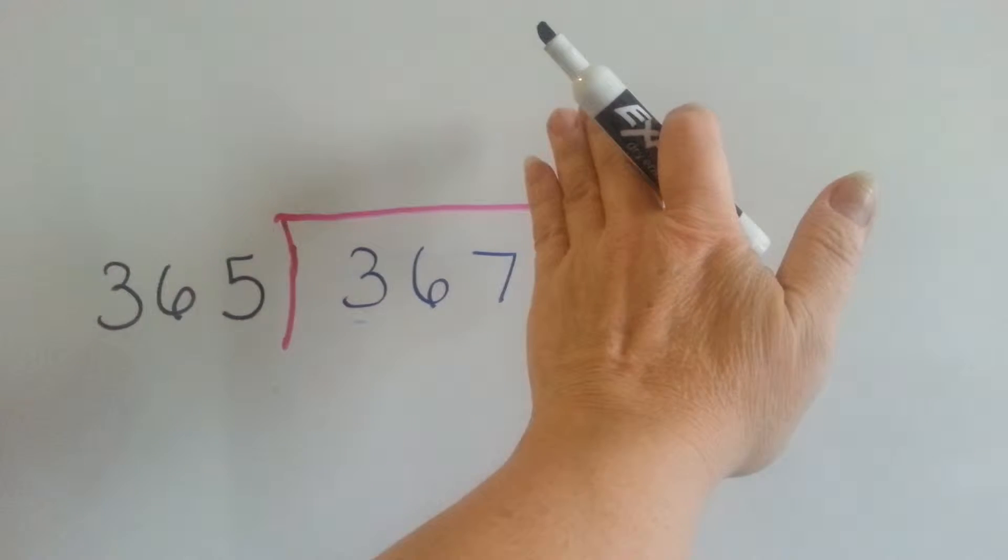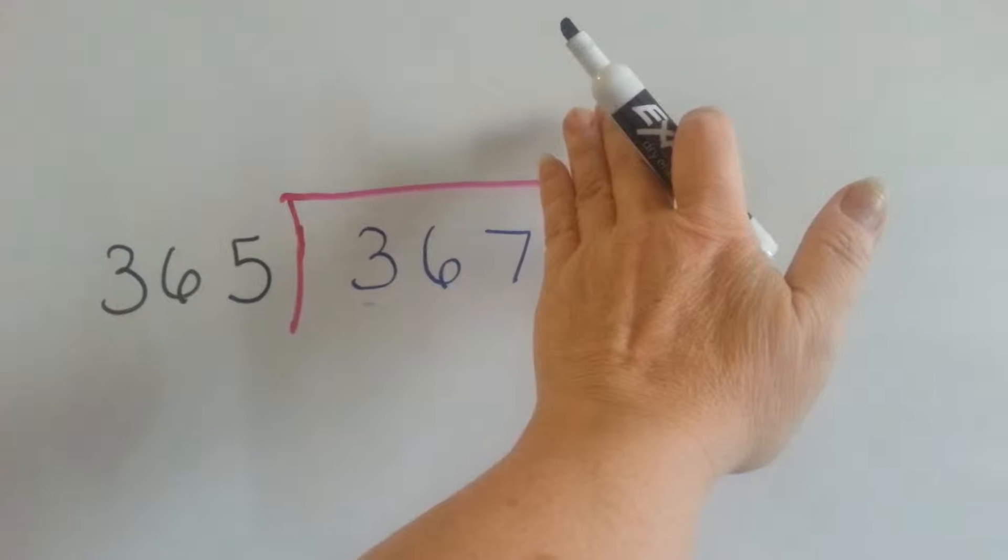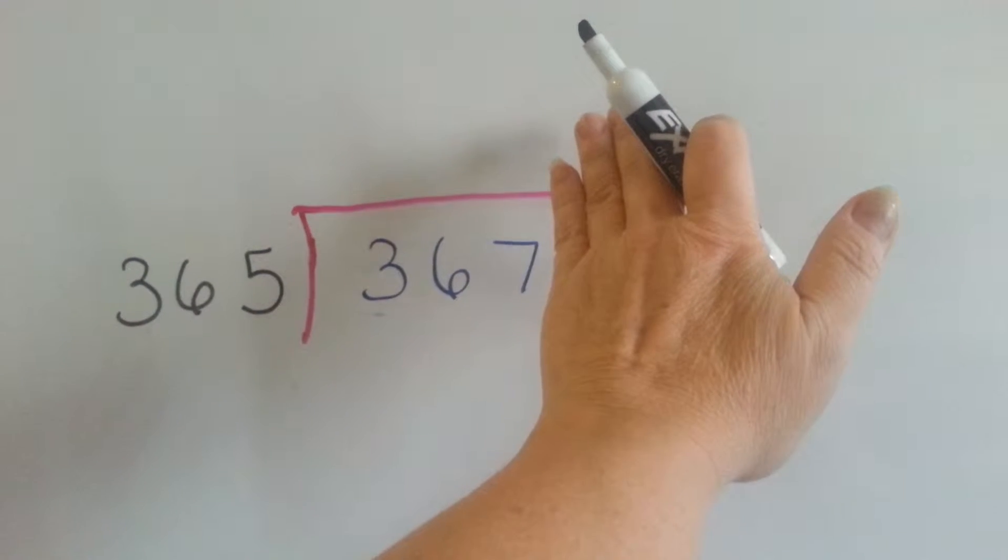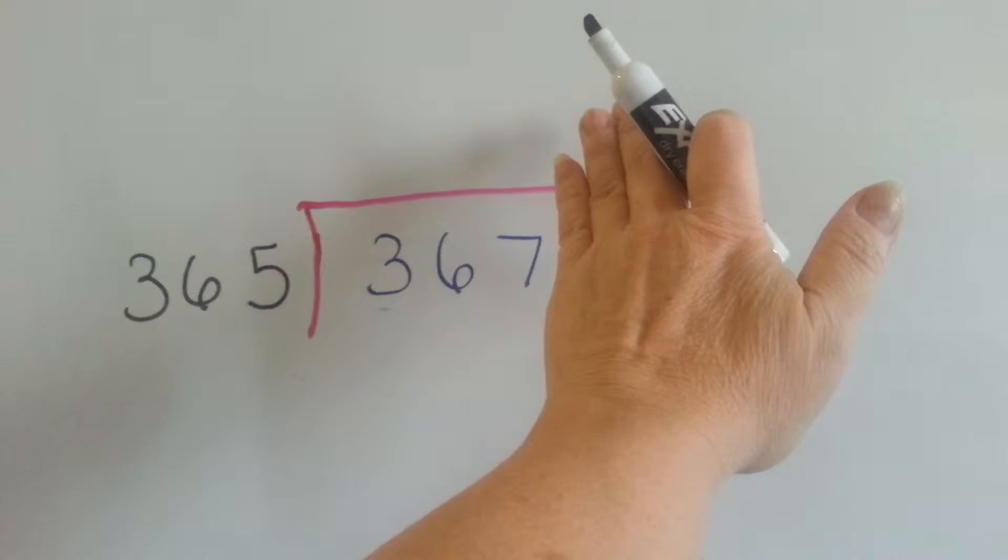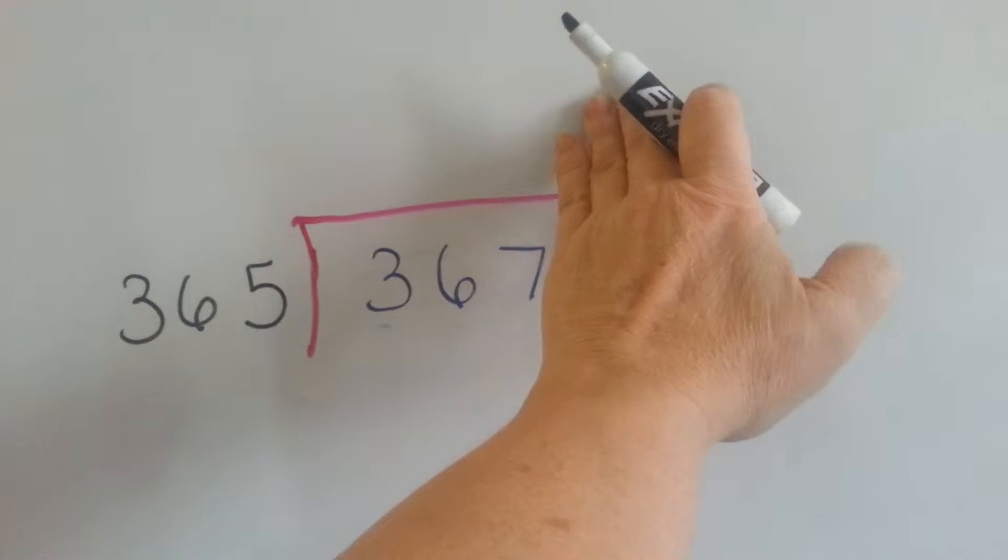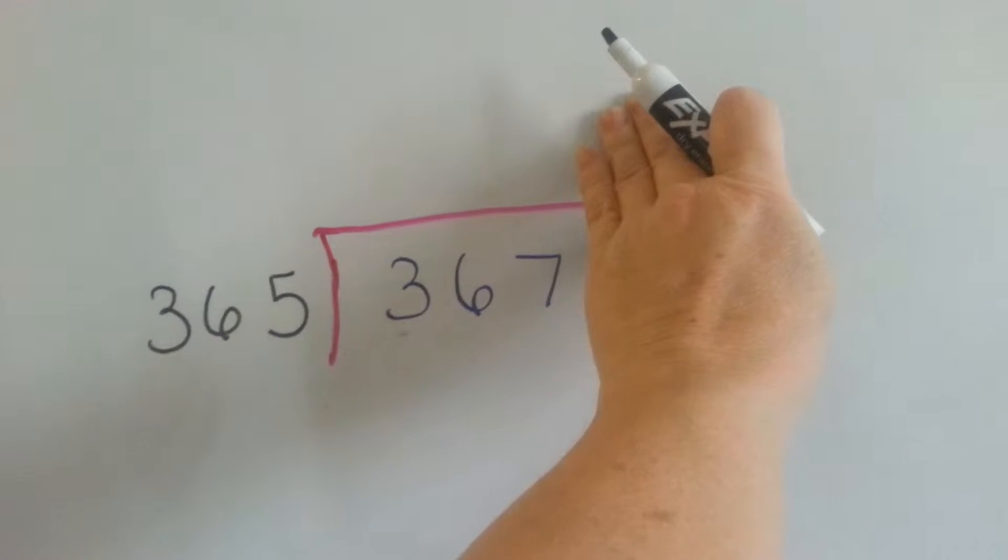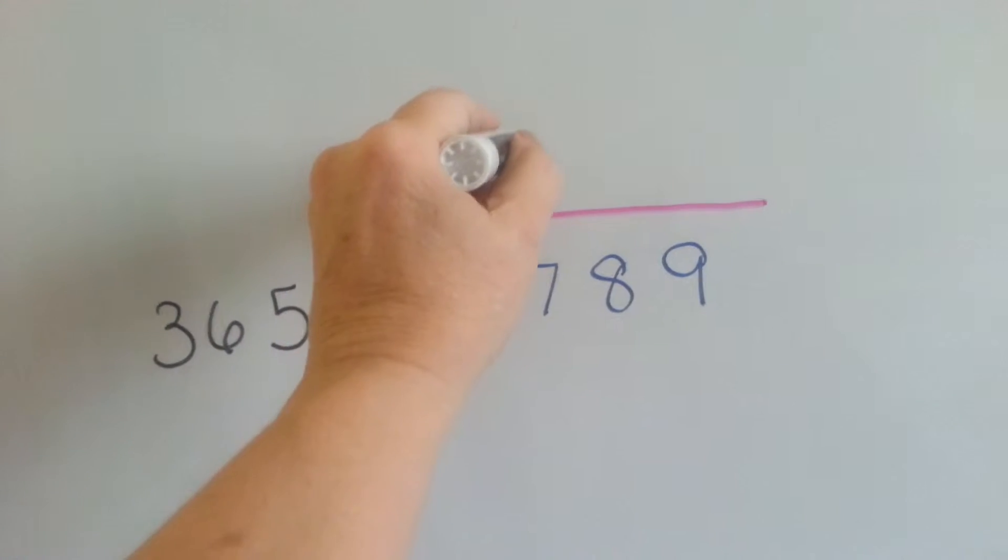But can 365 fit into 367? Yes, if you look at it, it actually can fit in there one time, right? And it's even going to have a couple left over. So 365 fits into the 367 one time. So because we're putting it into the 367, our 1 goes above the 7.